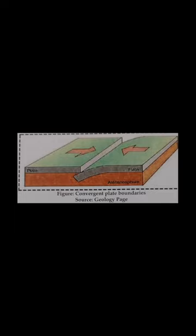Continent-continent convergence: in most cases, neither plate subducts, and even if one does, the subduction zone will not go deeper than 40 to 50 km. Convergence leads to collision and deformation of plates along boundaries, leading to the formation of fold mountains. Example: the Himalayas were formed due to the collision of the Eurasian and Indian plates.